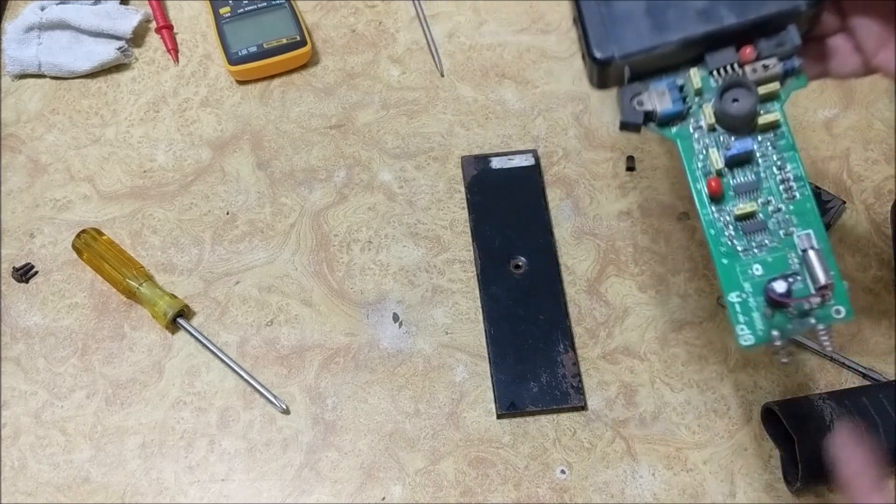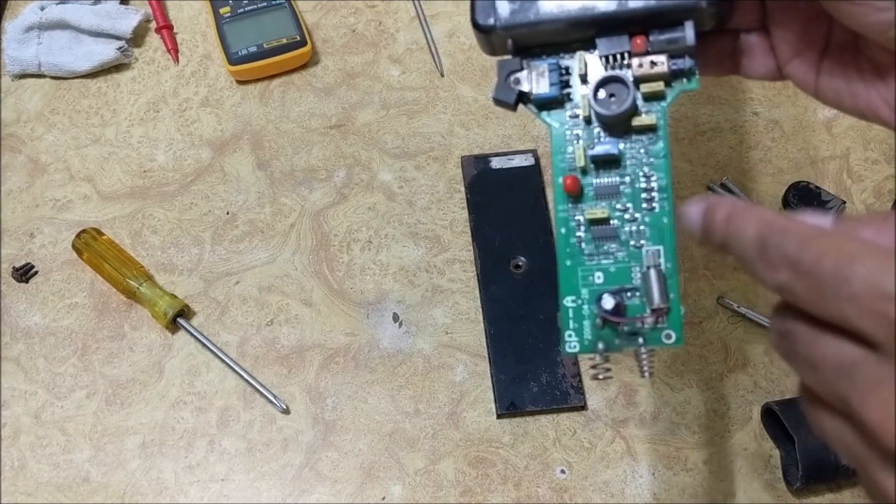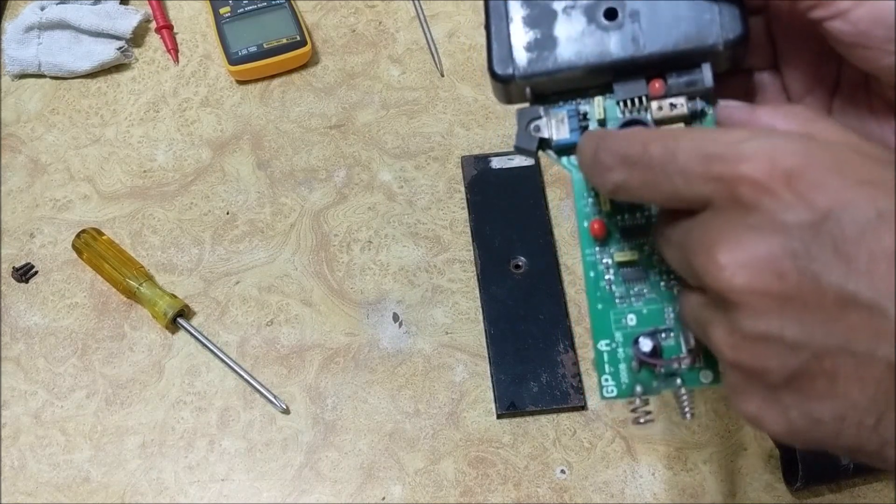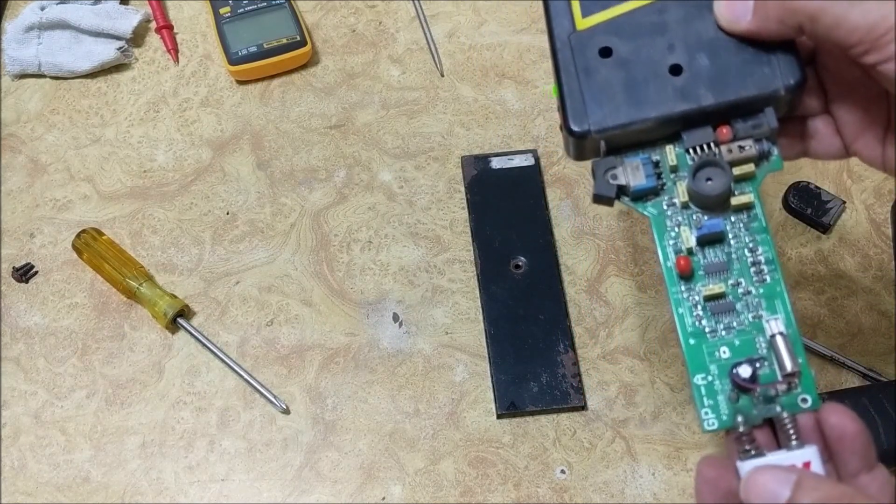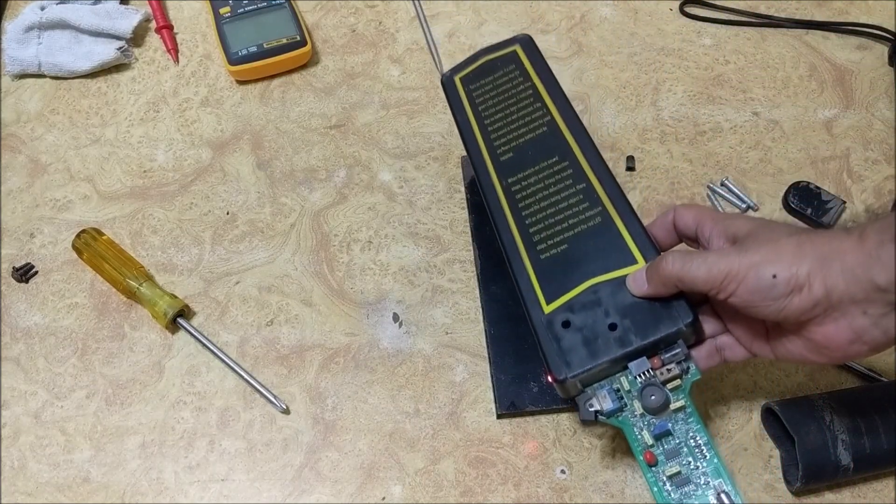In addition to the beep sound, this model also has a vibrator motor. By turning on this push button, when this metal detector comes close to a metal, the sound of the beep stops and the vibration starts.